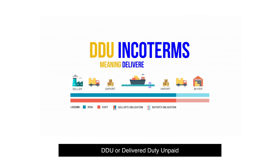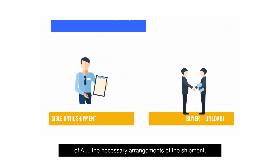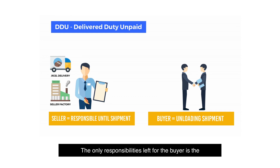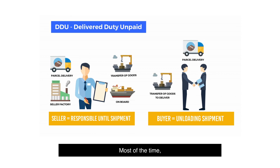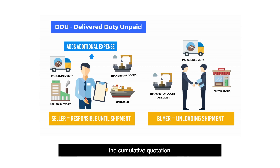DDU, or Delivery Duty Unpaid, is a type of agreement wherein the seller takes charge of all the necessary arrangements of the shipment, including the import customs fee. The only responsibilities left for the buyer are the unloading of the shipment and import clearance, if it wasn't included in the agreement. Most of the time, the seller adds every additional expense to the total shipping cost and then presents a landing cost — the cumulative quotation.